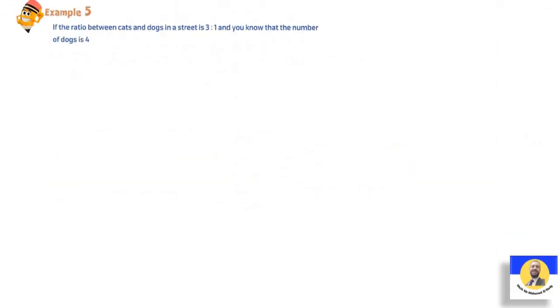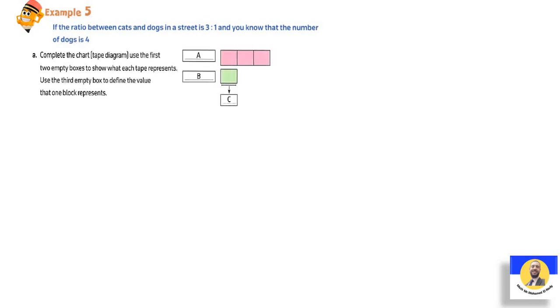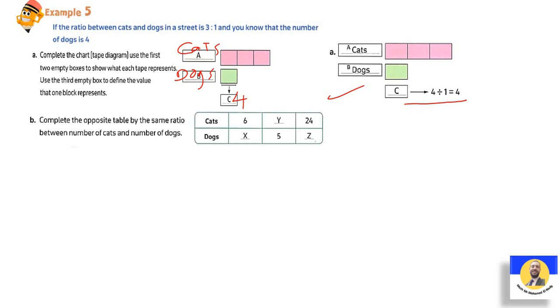Question 5: If the ratio between cats and dogs in a street is 3:1, and you know that the number of dogs is 4, we want to complete the chart of tape diagram. So we write in the first here we have 3, which means cats. The second is dogs. Each one is 3:1, and the dogs is 4. So here it will be 4. So this is the first answer: cats and dogs. 4 divided by 1 will be 4.